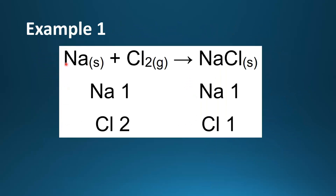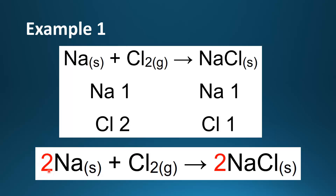Here we have sodium (Na) reacting with chlorine gas (Cl2) to make sodium chloride (NaCl). We have 1 atom of sodium and 2 atoms of chlorine, because chlorine is a diatomic gas — it forms molecules with 2 chlorine atoms. On the right side we have 1 atom of sodium and 1 atom of chlorine, so this equation is not balanced. I have balanced it by adding a 2 in front of the sodium and a 2 in front of the NaCl, so now we have equal numbers of atoms in the reactants and products.